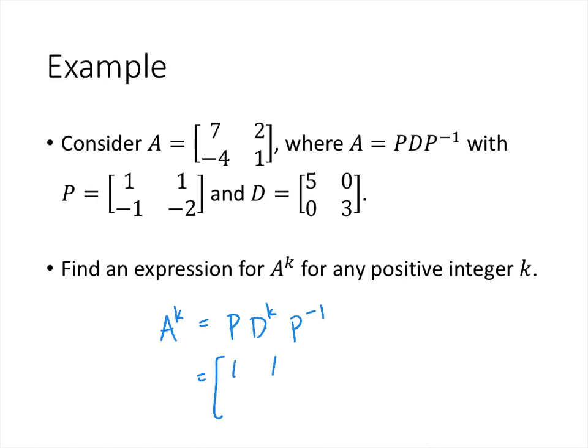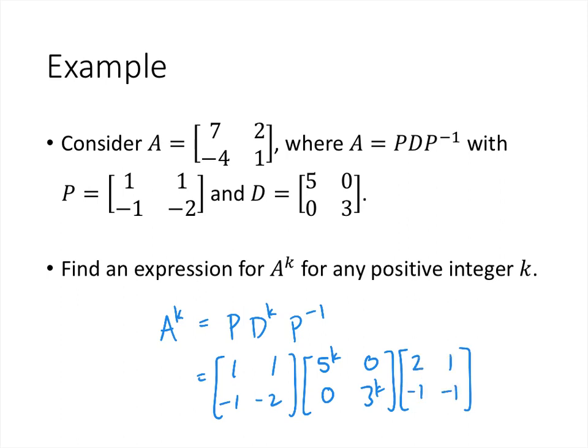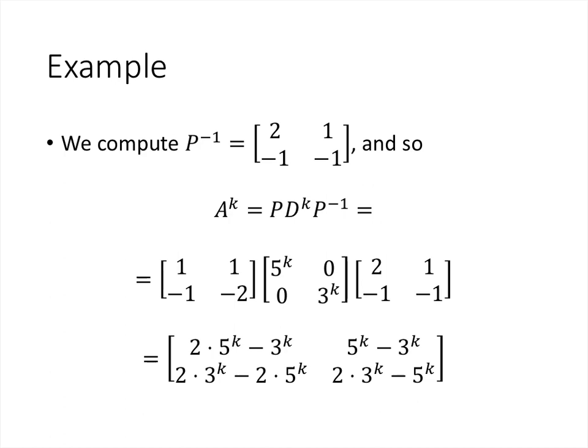P is [1, 1; -1, -2], D^k is [5^k, 0; 0, 3^k], and P⁻¹ — found by inverting the 2-by-2 matrix — turns out to be [2, 1; -1, -1]. Multiplying these three matrices together gives us a closed formula for A^k. Whatever value of k we want, we just plug it in — we don't need to know A^(k-1) or anything like that. For the 50th power of A, we simply plug k = 50 into the formula instead of multiplying A by itself 50 times.